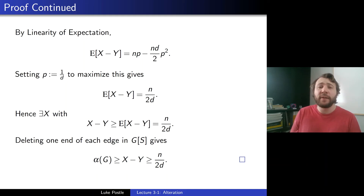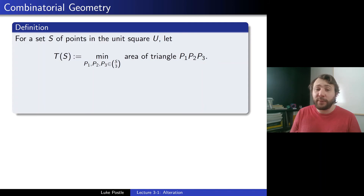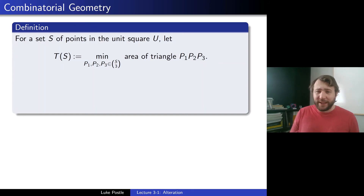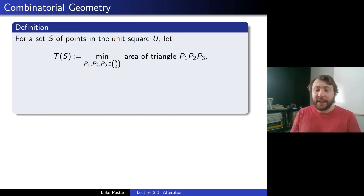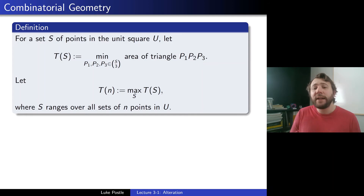Our last example comes from combinatorial geometry. For a set S of points in the unit square U, let T(S) denote the minimum area triangle formed by any three points in S — that is, the minimum over all triples P1, P2, P3 in S of the area of triangle P1P2P3. Three collinear points would give area zero. More interesting is T(n): the maximum over all sets S of n points in U of T(S) — we want to find a set of points where even the smallest triangle isn't too small.